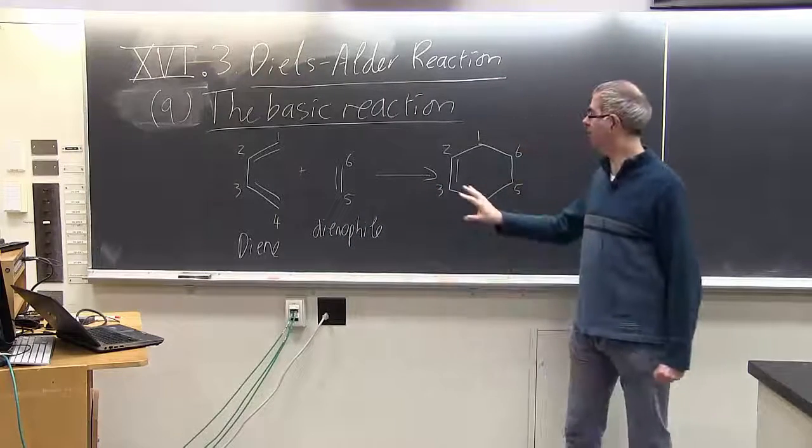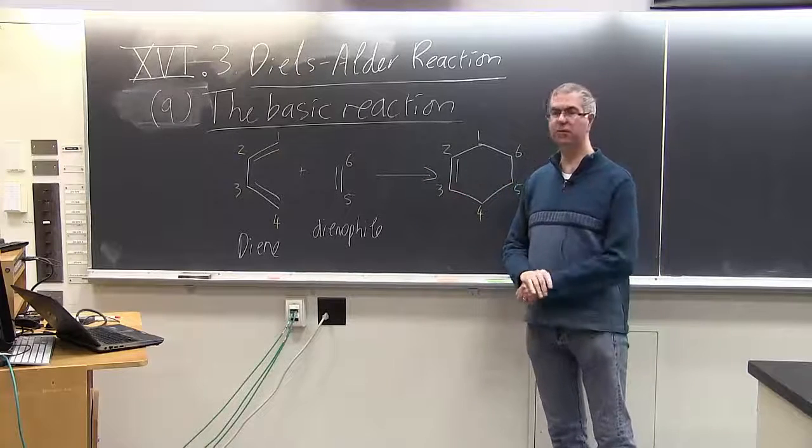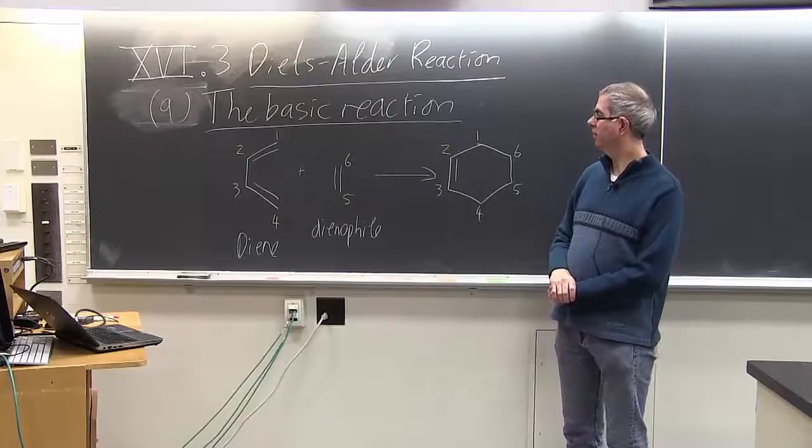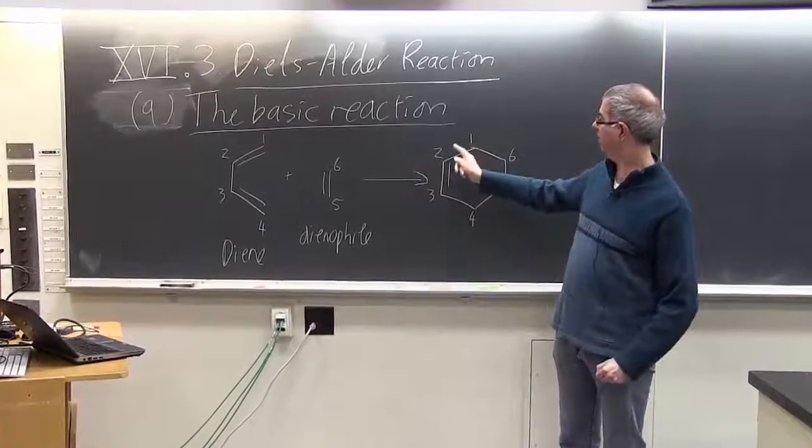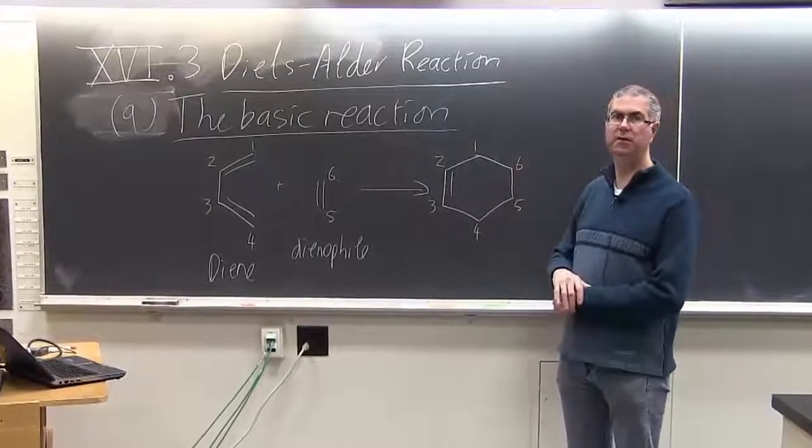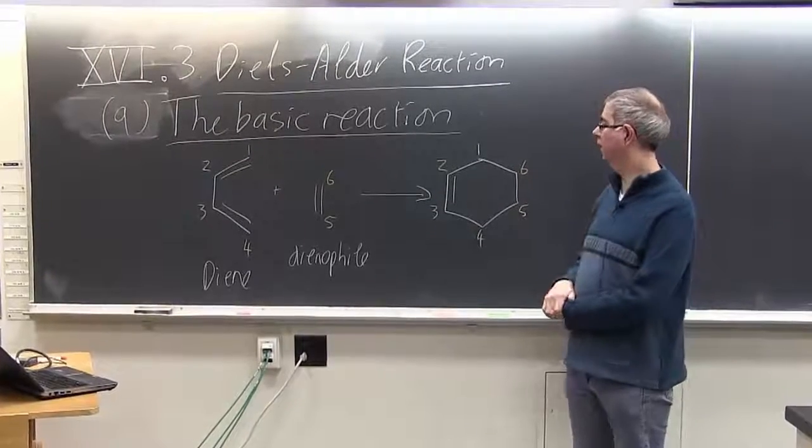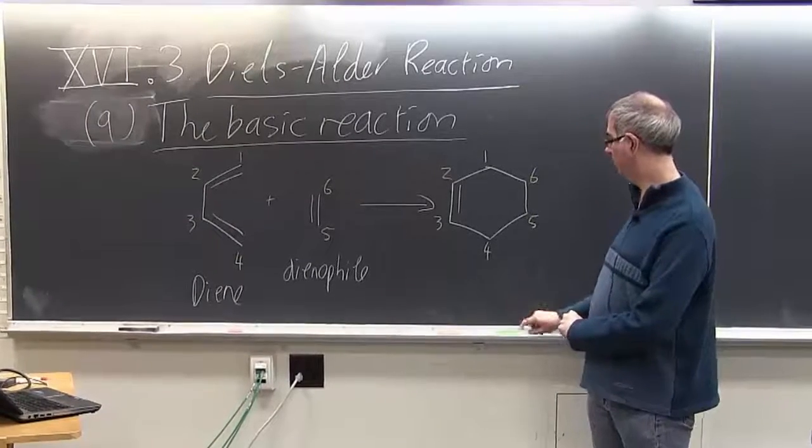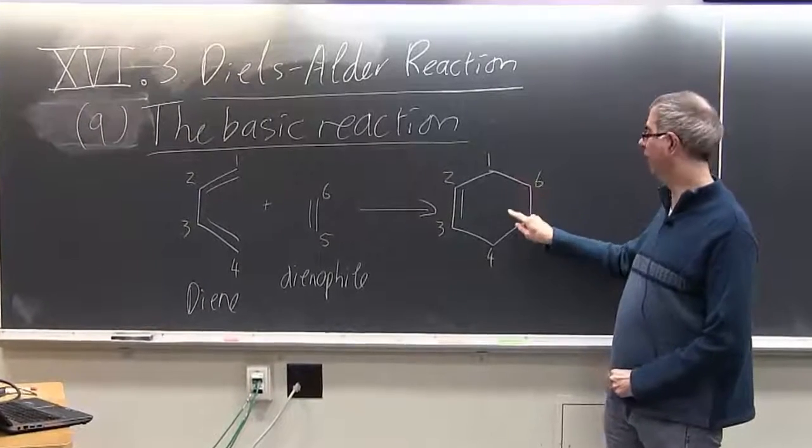Now I've numbered the atoms here so that you can see what's going on. So this is what used to be the diene, and this is what used to be the dienophile coming together. So the two new bonds you've made are here and here.